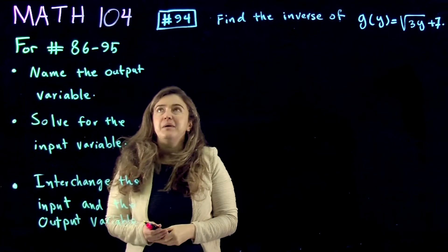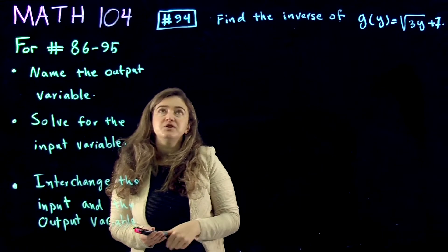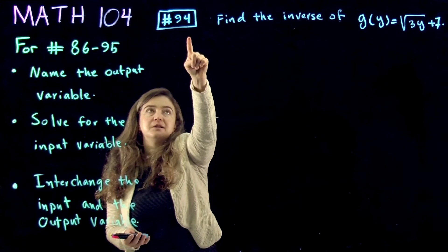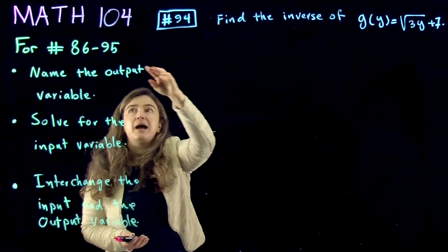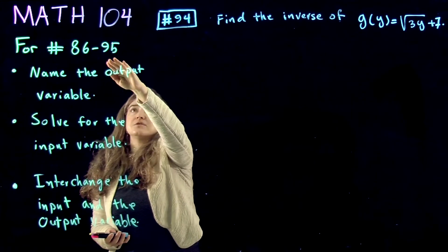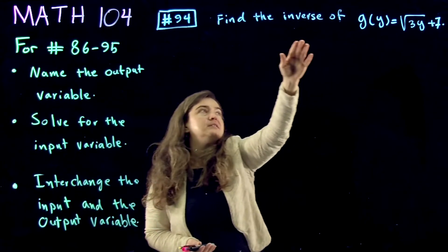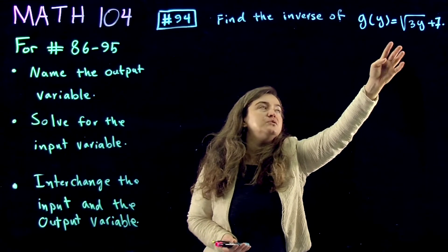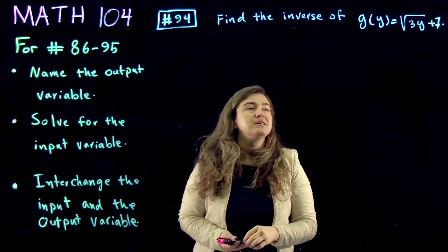We're continuing with math 104 gateway questions. This is question number 94 from the pool 86 to 95: find the inverse of g(y) equal to square root of 3y plus 7.